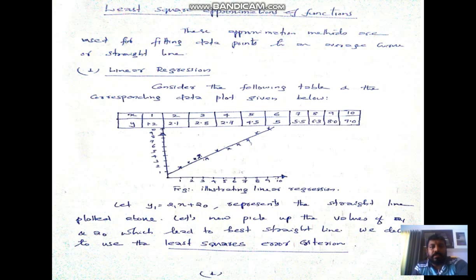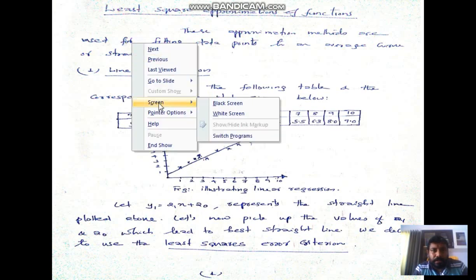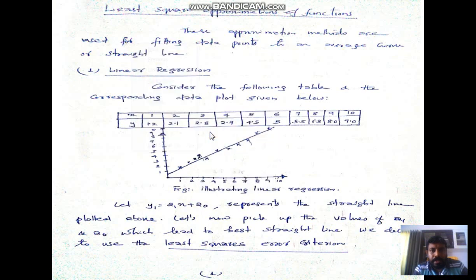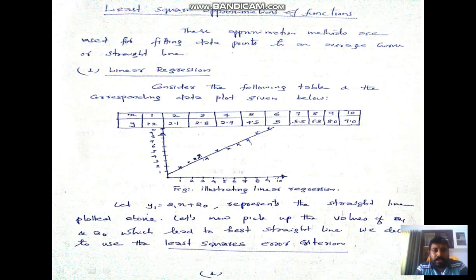So, least square regression. Suppose a table is given where x values and y values are provided. Here x values are given — x is 1, 2, 3, and so on up to 10. y is given as 1.2, 2.1, 2.8, something up to 9.8. These two values are used to plot scattered points; x and y coordinates are given. The most probable curve is the straight line, which has slope a1 and intercept a0.